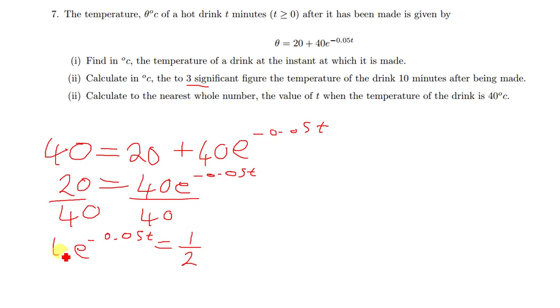What you can do is find the ln of this side and this side. 1/2 can also be written as 0.5. So when you find the ln on both sides, you can bring down this negative 0.05t.